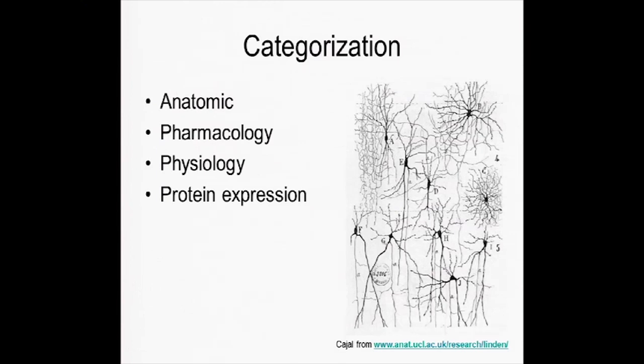We talk about cells in a bunch of different ways, and we have to identify them, and we can identify them by their shapes. So this is what Cajal did, and went in and labeled all these cells by staining them.